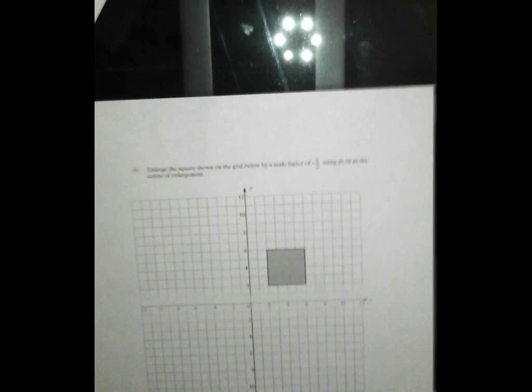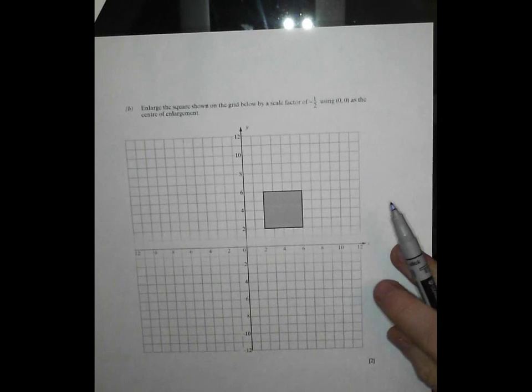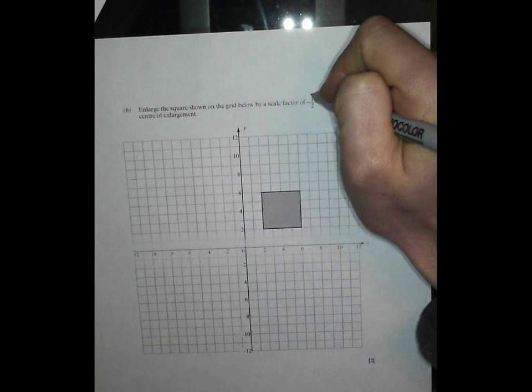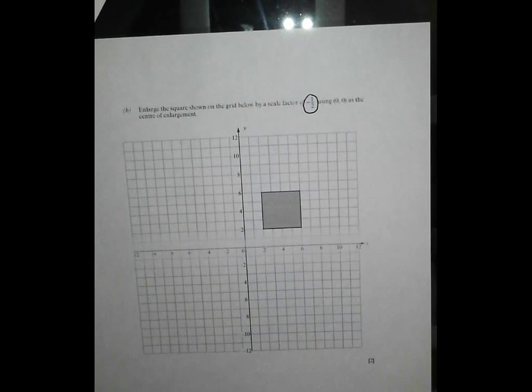But now, the big finale. What have we got here? Enlarge the square shown on the grid by a scale factor of, here's the issue, minus a half. Now we've done scale factor 2 and scale factor 3, but we've not done a half. But that's okay. The half bit isn't actually too bad. The half just means you go half as far.